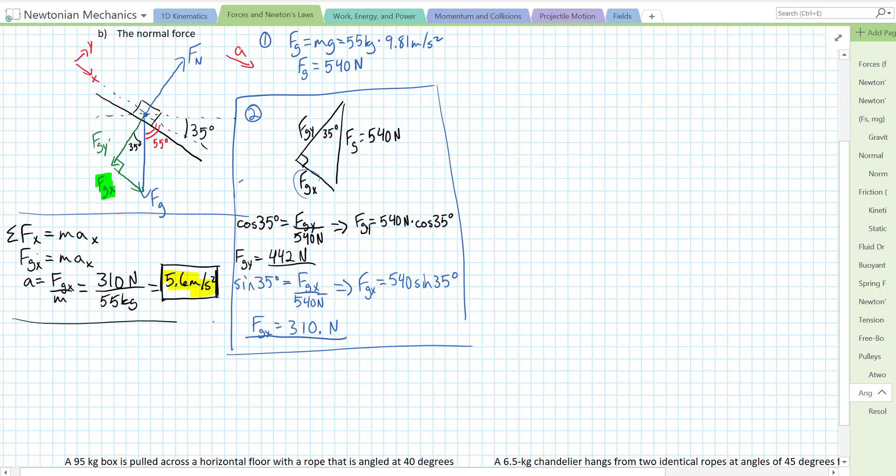Next one, it asks us to find the normal force. So, we're going to sum of the forces in the y direction now. Remember, the y direction isn't vertical. It's the direction perpendicular to the slope. So, sum of the forces in the y direction equals mass times acceleration in the y direction. Left side, we add up all our forces. We have the normal force pointing up minus the y component of gravity pulling into the slope. Sorry, the normal force wasn't pointing up. It's pointing out of the slope.